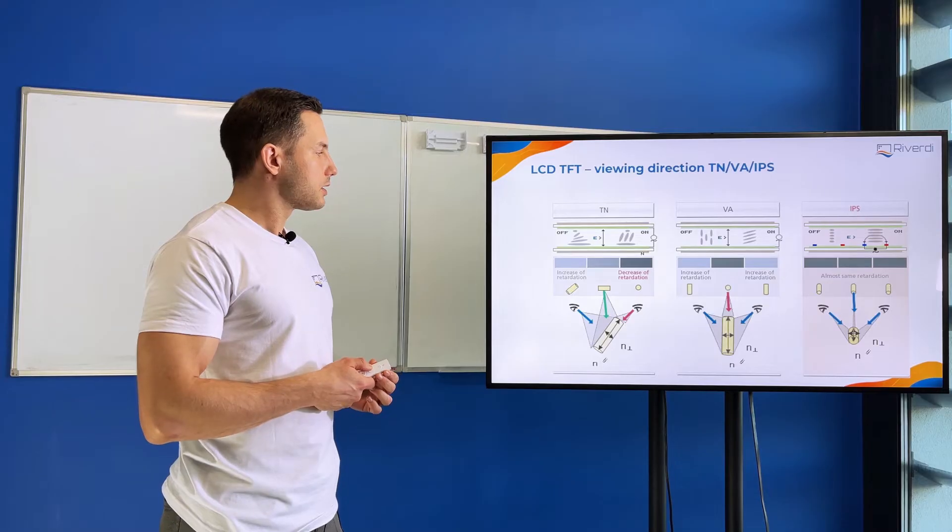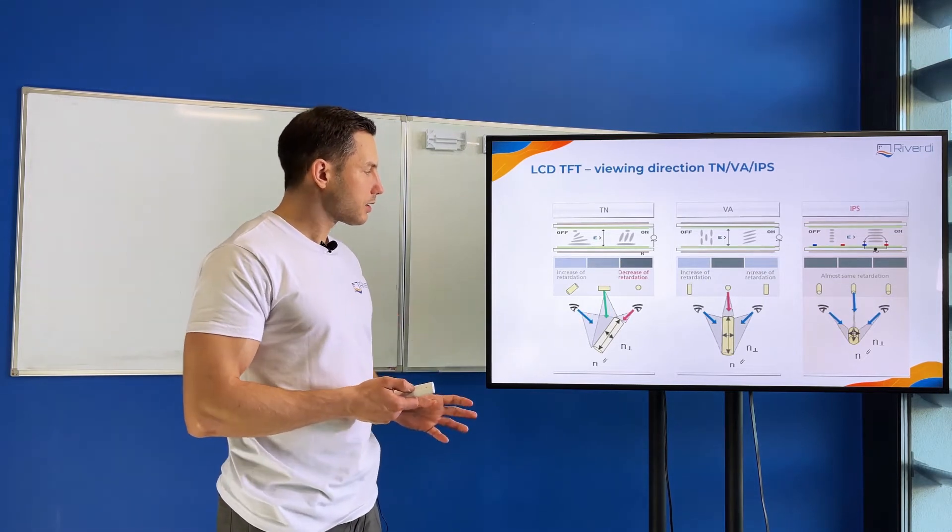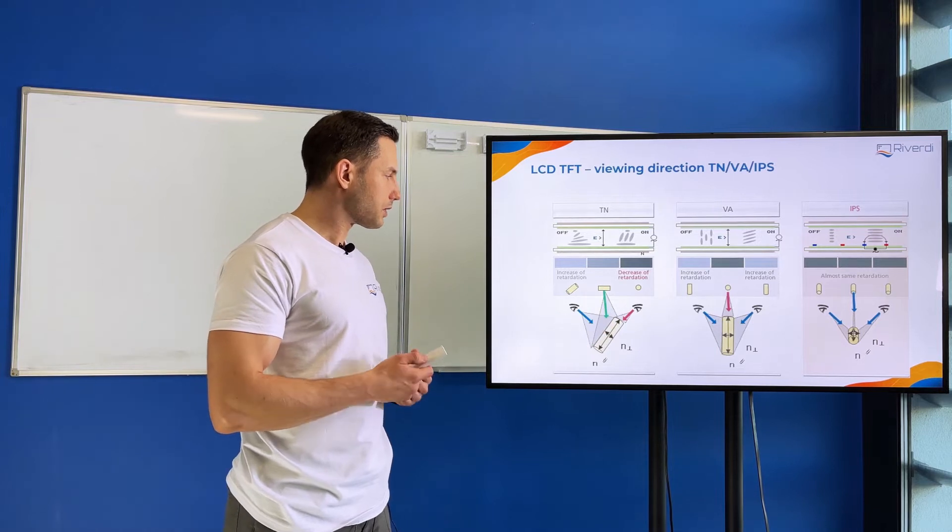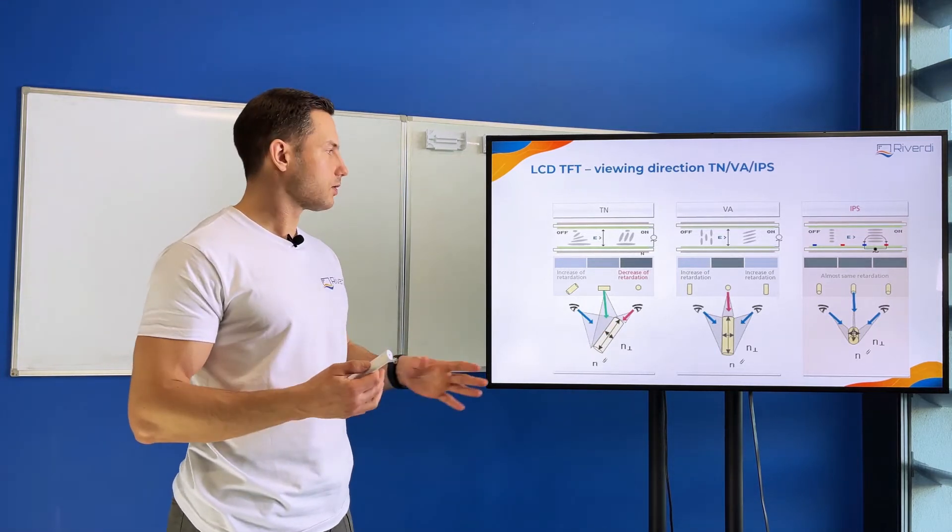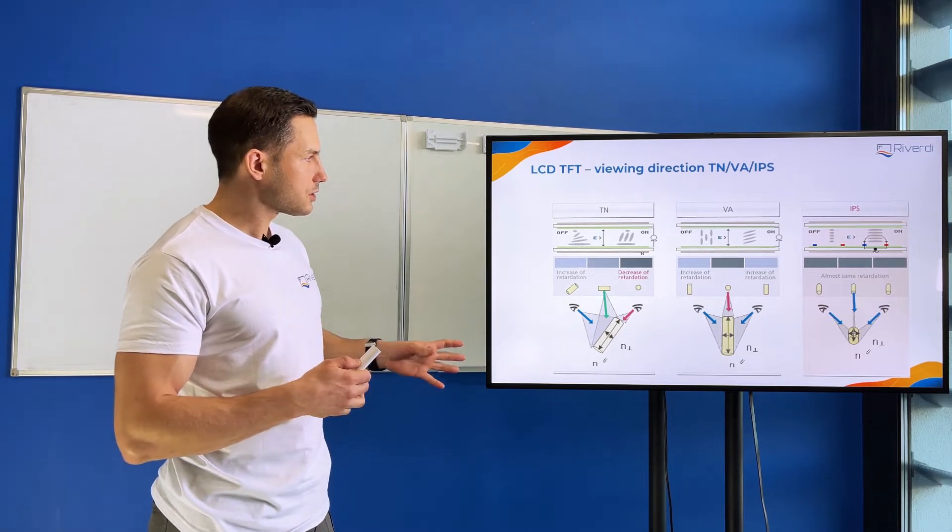And this kind of display, as we already know, has a problem with gray scale inversion. So on one side we have higher retardation and we will not see the image clearly.